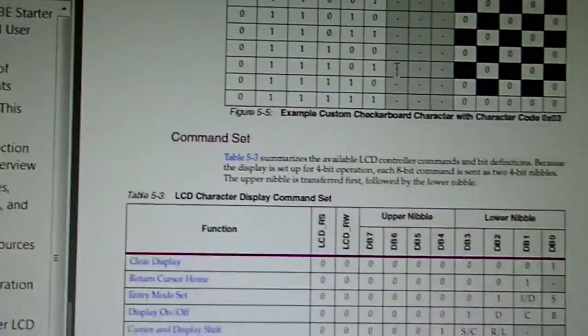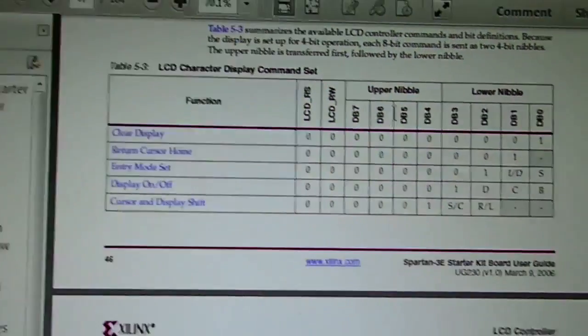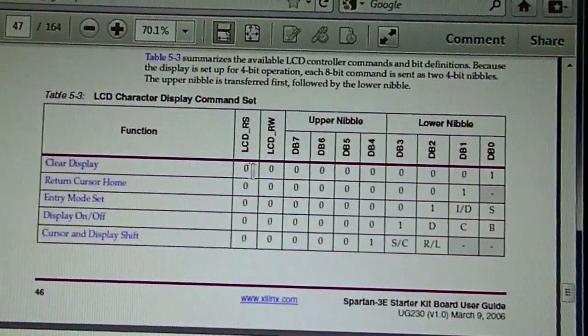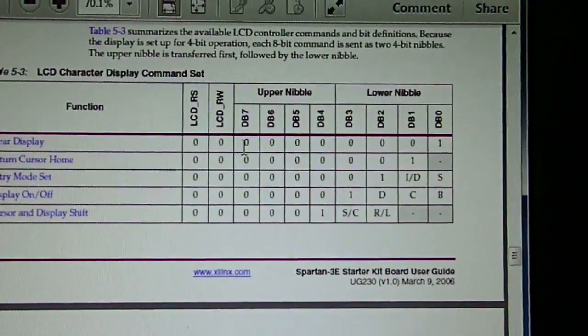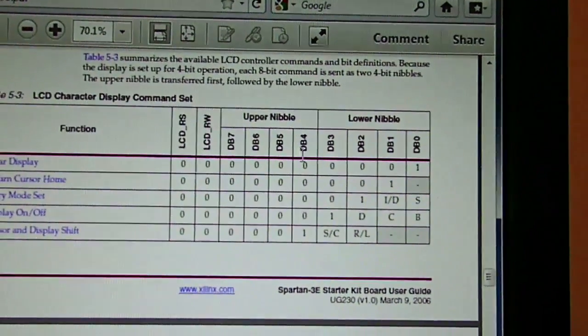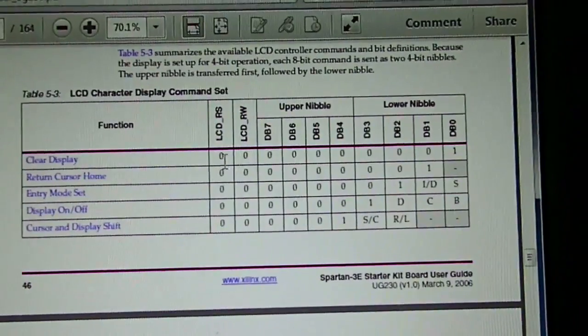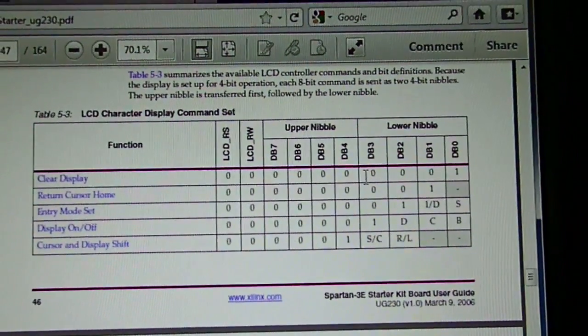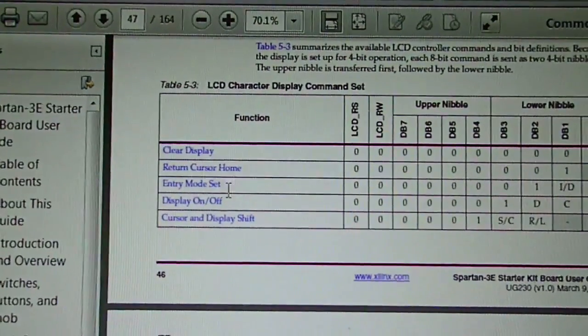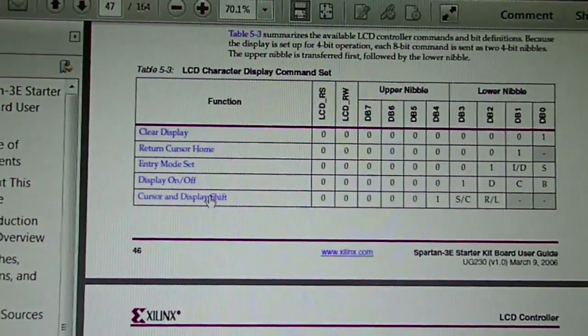Table 5-3 is the LCD character display command set. Suppose we want to clear the display, we've got to send down the register select 0, read/write 0, and the upper nibble 00000, and then the lower nibble 0001. The two nibbles are to be sent in two different sequences coupled with the RS and RW. So each time we send out is a six-bit signal, and then another six-bit signal. All these are commands to do certain functions with the LCD. Initially, the initialization step of the LCD requires these to be set correctly.